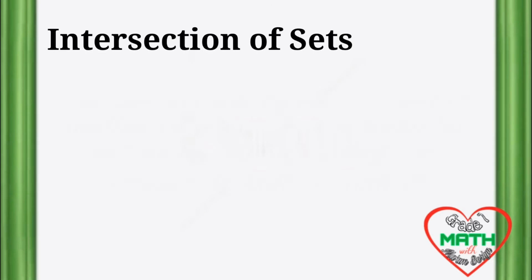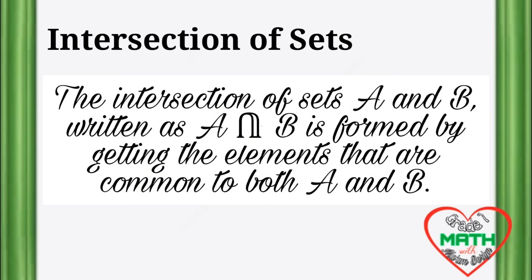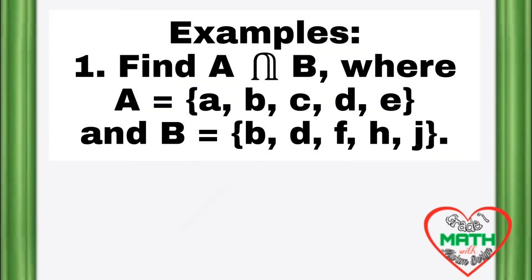Intersection of Sets. The intersection of sets A and B, written as A intersection B, is formed by getting the elements that are common to both A and B. For example, find A intersection B where A is equal to {A, B, C, D, E} and B is equal to {B, D, F, H, J}.